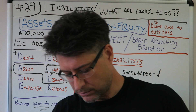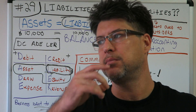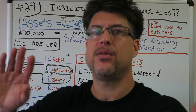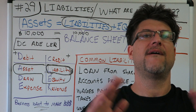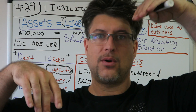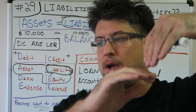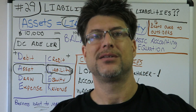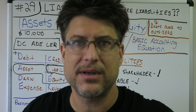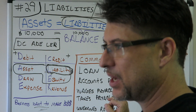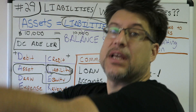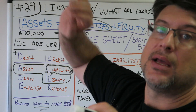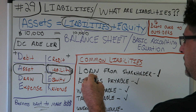Taxes payable — like sales tax. At the end of the month you figure out you owe the state for sales tax, say $500. They give you a couple weeks to pay because you're always working behind in accounting. The gist of it: taxes payable means you figured out you owe the state taxes but you haven't paid them yet — it's a debt to an outsider.